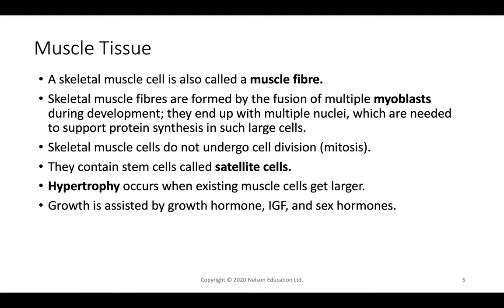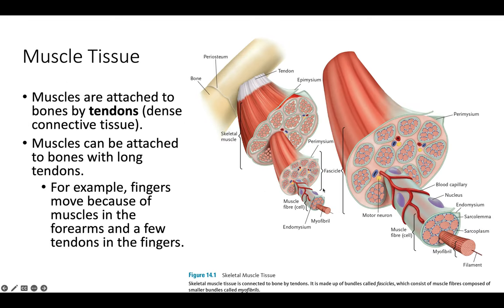When skeletal muscle cells die, they have to be regenerated or replaced by stem cells, also called satellite cells. As we age, we get fewer of these, so it becomes harder to replenish muscles. Hypertrophy — meaning large in size — occurs when muscle cells get larger, but bigger doesn't always mean better functioning. Muscle tissue growth is triggered by hormones such as insulin growth factor, growth hormone, and other sex hormones.